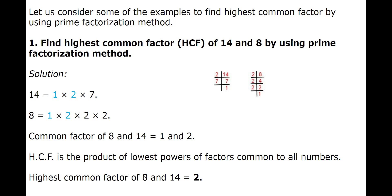The first number is 14. We divide it by all prime numbers till the last number is exactly divisible. We get the factors 1, 2, and 7. The next number is 8. Again, we divide it by all prime numbers till the last number is exactly divisible and we get the factors 1 × 2 × 2 × 2.